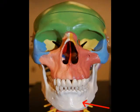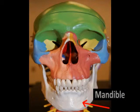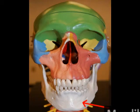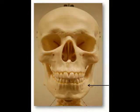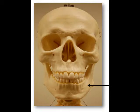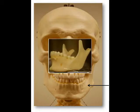The lower jawbone is the mandible, which is the largest as well as the strongest of the facial bones. And besides the auditory ossicles, which are the tiny bones within the ear, the mandible is the only skull bone that is movable.